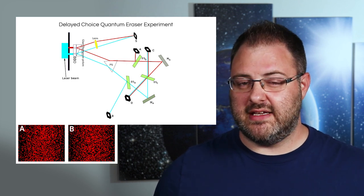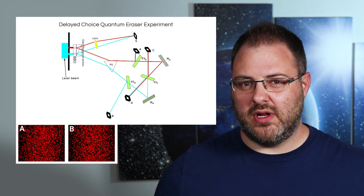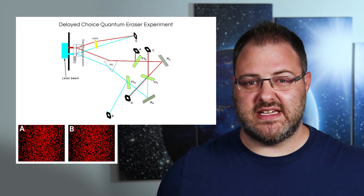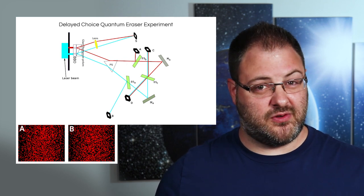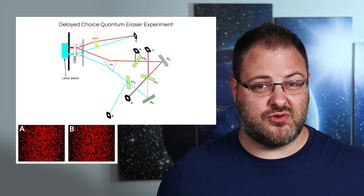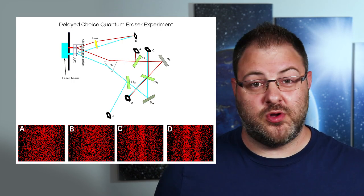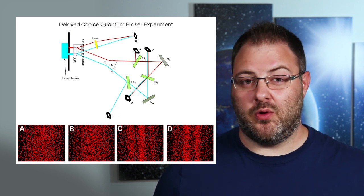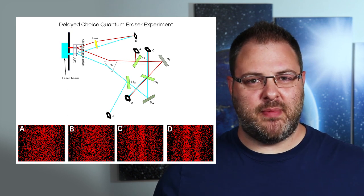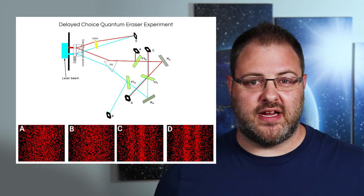So when we were only using detectors A and B, we ended up destroying the interference pattern. What do you think will happen now if we only use detectors C and D that no longer have the which way information about the photon's path? Will we see an interference pattern emerge or will it still be destroyed like before? Feel free to pause the video here and think about it. If you guessed that the interference pattern would be restored, then you are correct. So simply by obscuring the information about which path the photon took, it's able to go back to behaving like a wave and go through both slits at the same time, restoring the interference pattern.